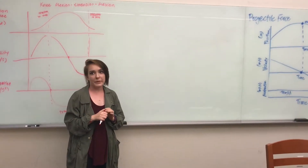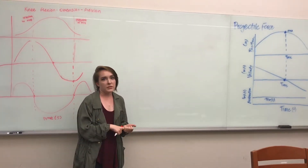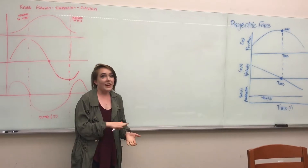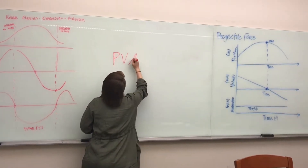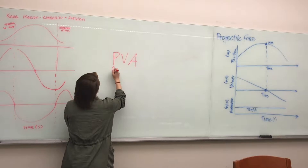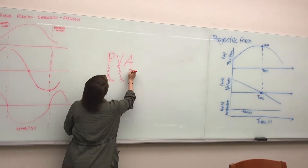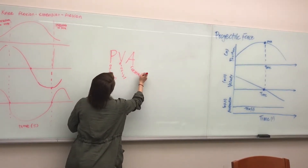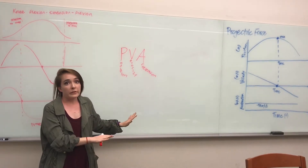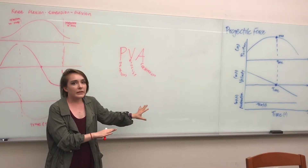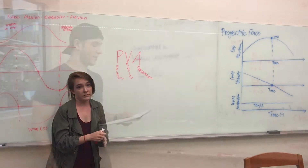Welcome to our review of PVA relationships. In a time history of motion analysis, we find that position, velocity, and acceleration have predictable relationships, and we call these the PVA relationships — P for position, V for velocity, and A for acceleration. We'll give an overview of the calculus-based terms and illustrate how the position, velocity, and acceleration graphs are interconnected.